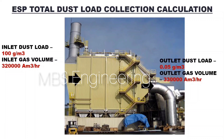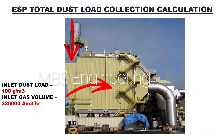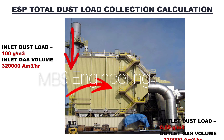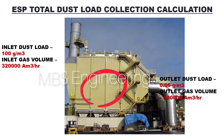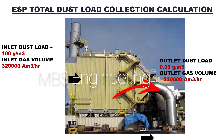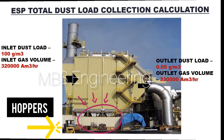Please refer to the ESP equipment schematic photos with the inlet and outlet duct connections. The gas flow through the ESP inlet has an inlet dust load concentration of 100 grams per cubic meter and an inlet gas volume of 3,20,000 cubic meters per hour. After sufficient dust collection takes place inside the precipitator, gas exits from the ESP outlet with a dust load concentration of 0.05 grams per cubic meter and an outlet gas volume of 3,30,000 cubic meters per hour. With the aid of the collecting and discharge electrodes, sufficient dust is collected in the hopper.